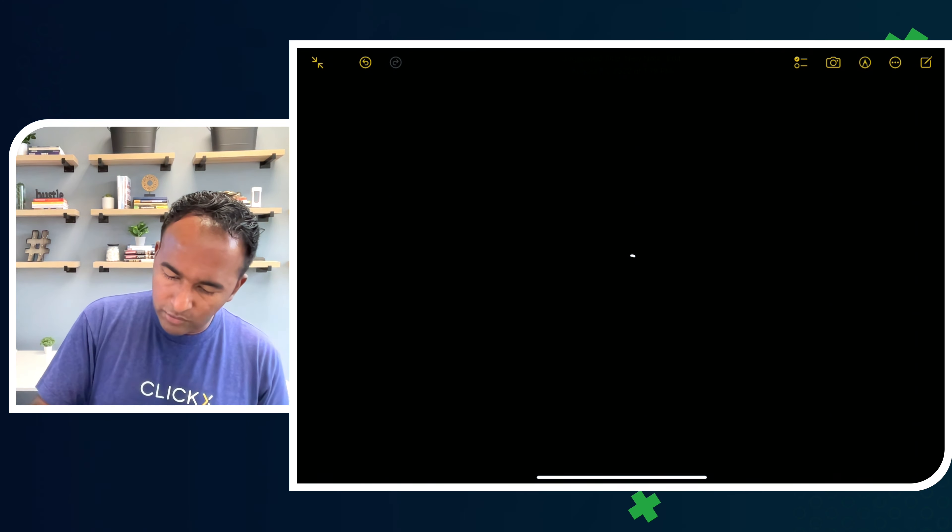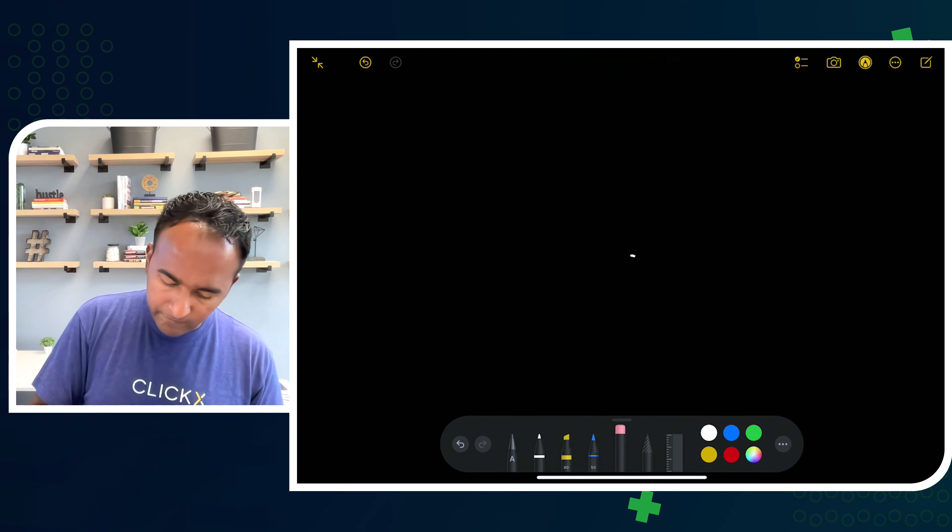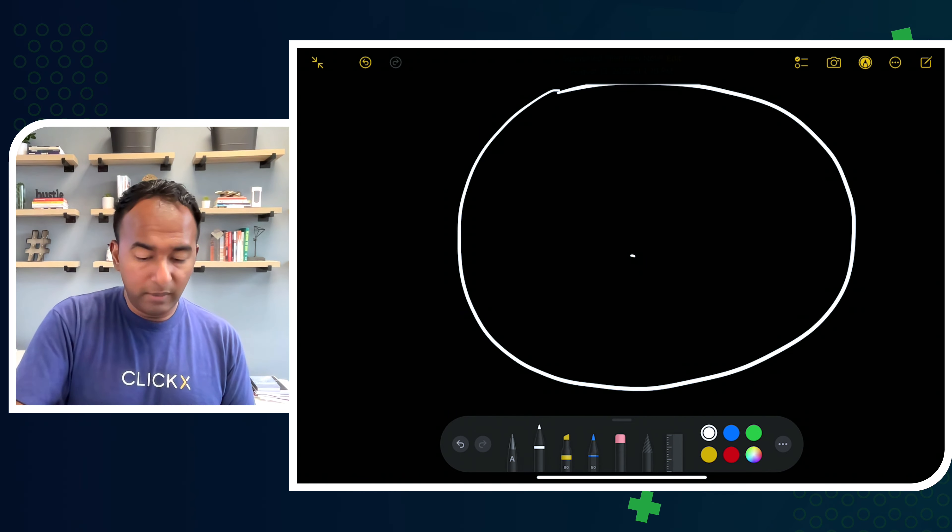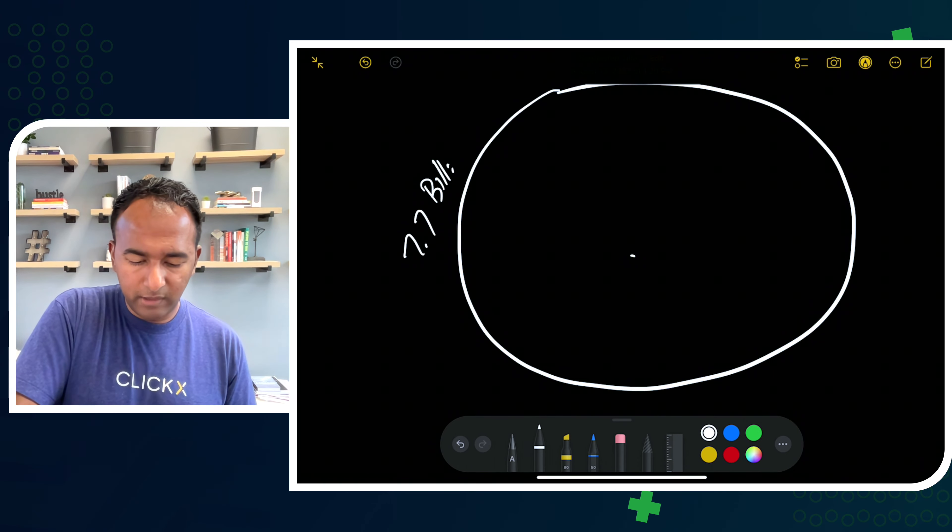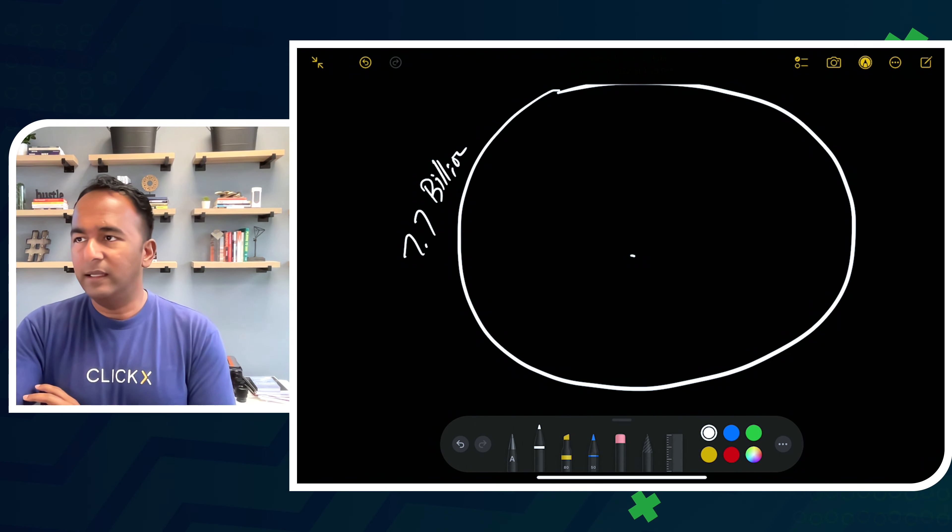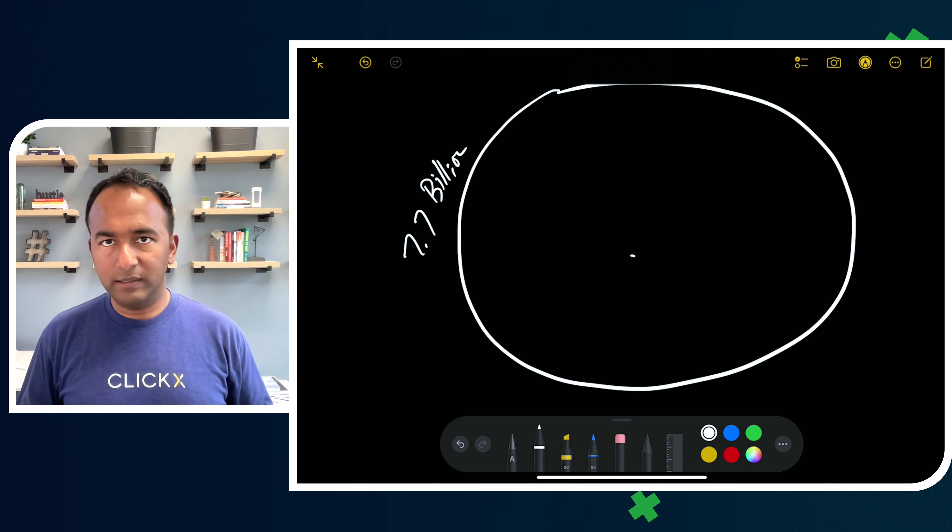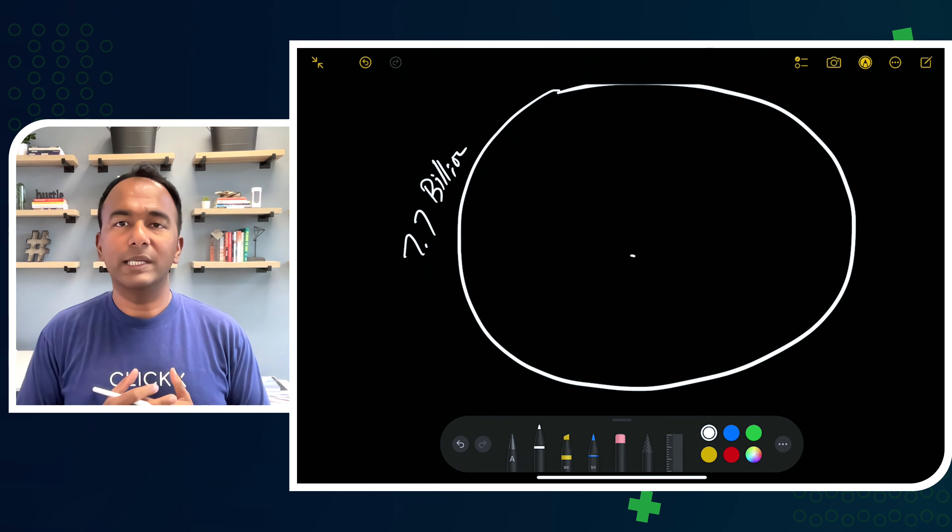Number one, I want you to think about the whole world population. The whole world is 7.7 billion people. So I'm just going to draw a big circle here. 7.7 billion people, we're included in that. When you don't have a niche, it's kind of like anybody who is out there is my client. That's not good. We need to narrow this down.